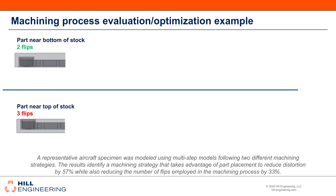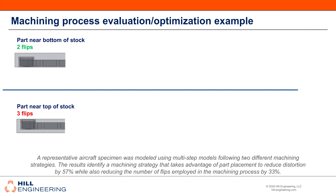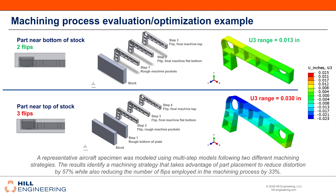Finally, here's an example where machining process evaluation and optimization is shown. We consider a representative aircraft part and use multi-step models to simulate two different machining strategies, including variations in part placement within the stock material and the sequence of machining operations. The results identify a machining strategy that takes advantage of part placement within the stock material to reduce distortion by 57%, while also reducing the number of material flips in the machining process from three to two.